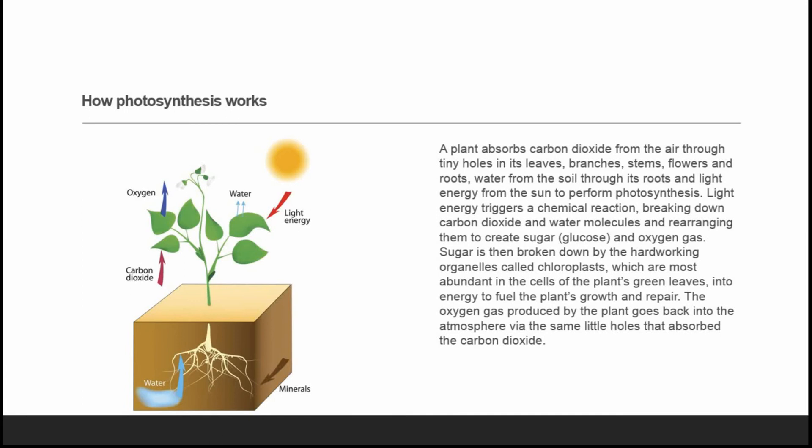Sugar is then broken down by hard-working organelles called chloroplasts, which are most abundant in the cells of the plant's green leaves, into energy to fuel the plant's growth and repair. The oxygen gas produced by the plant goes back into the atmosphere via the same little holes that absorbed the carbon dioxide.